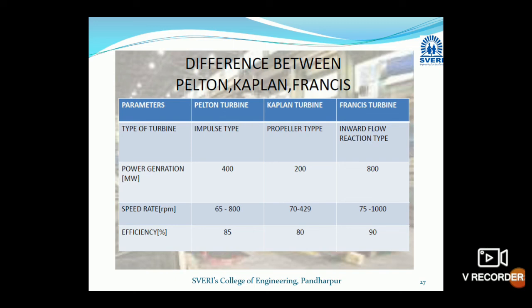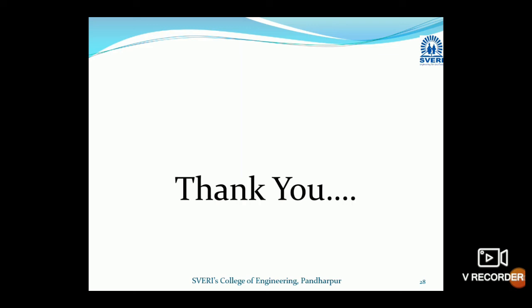To summarize the differences: the Pelton turbine is an impulse turbine; the Kaplan turbine is a propeller-type reaction turbine; and the Francis turbine is an inward flow reaction turbine. Power generation: Pelton up to 400 megawatts, Kaplan up to 200 megawatts, Francis up to 800 megawatts. Speed ranges: Pelton 65–800 rpm, Kaplan 70–420 rpm, Francis 75–1000 rpm. Efficiency: Pelton is lowest, Kaplan has high efficiency, Francis is about 90%. This concludes the lecture; next lectures will cover the analysis part of turbines. Thank you.